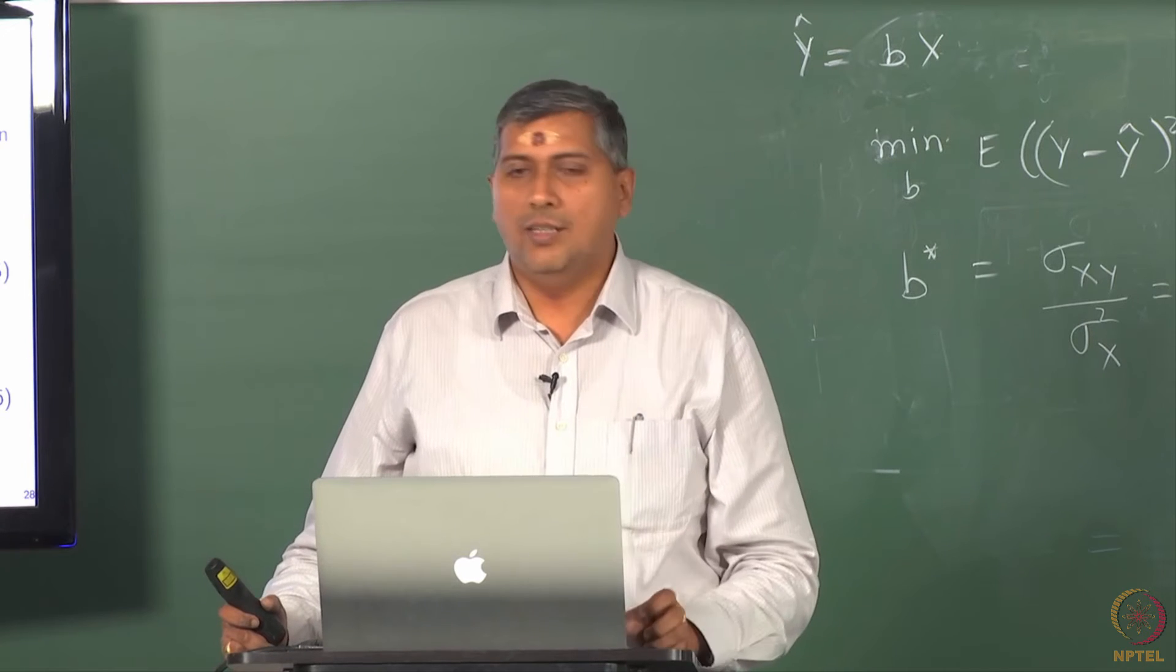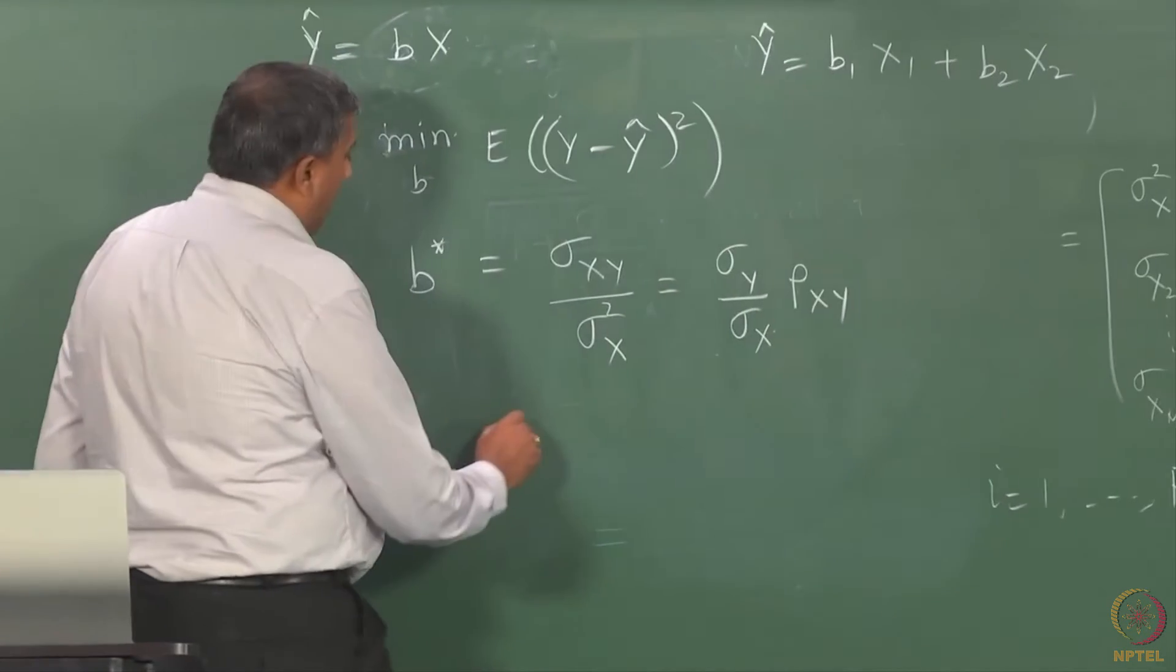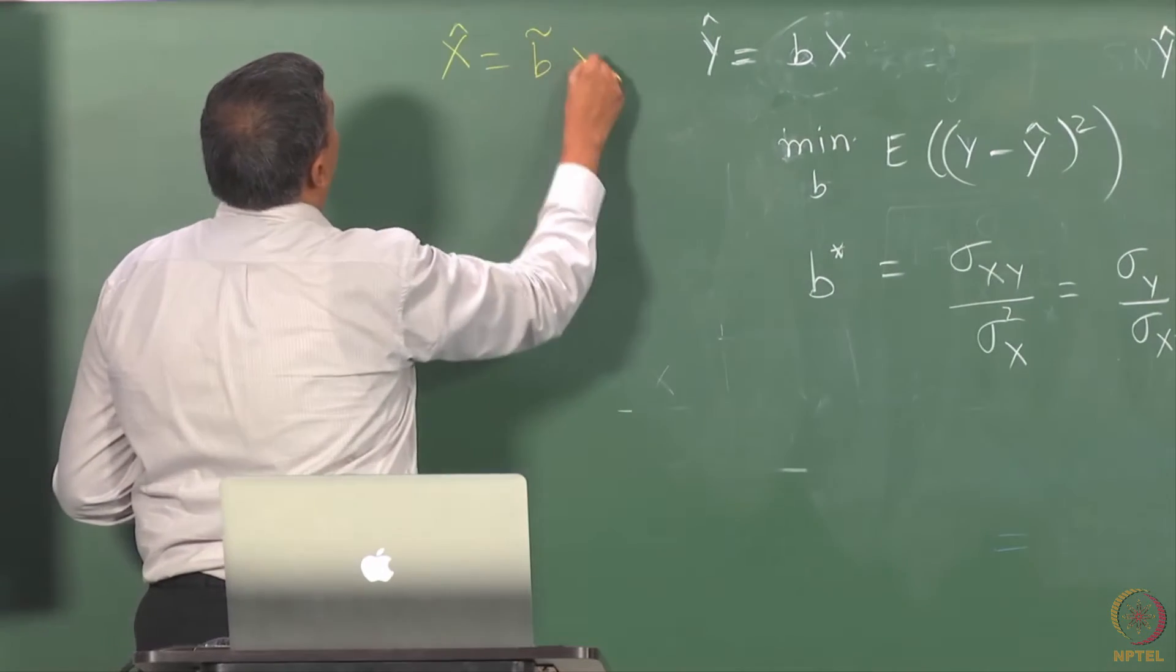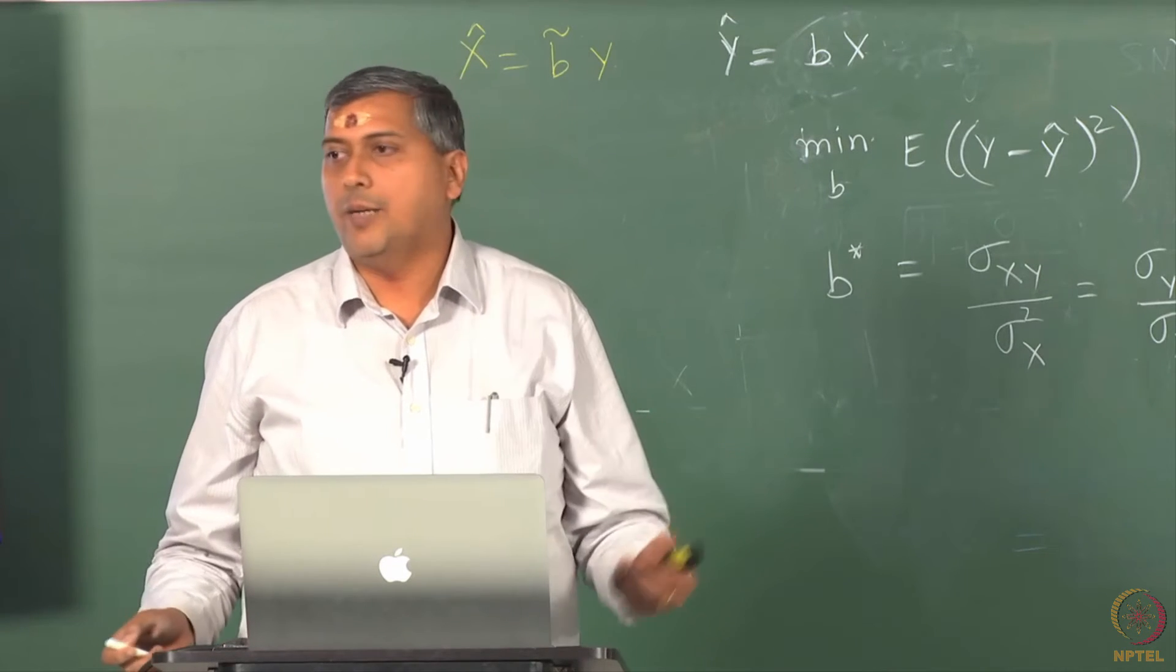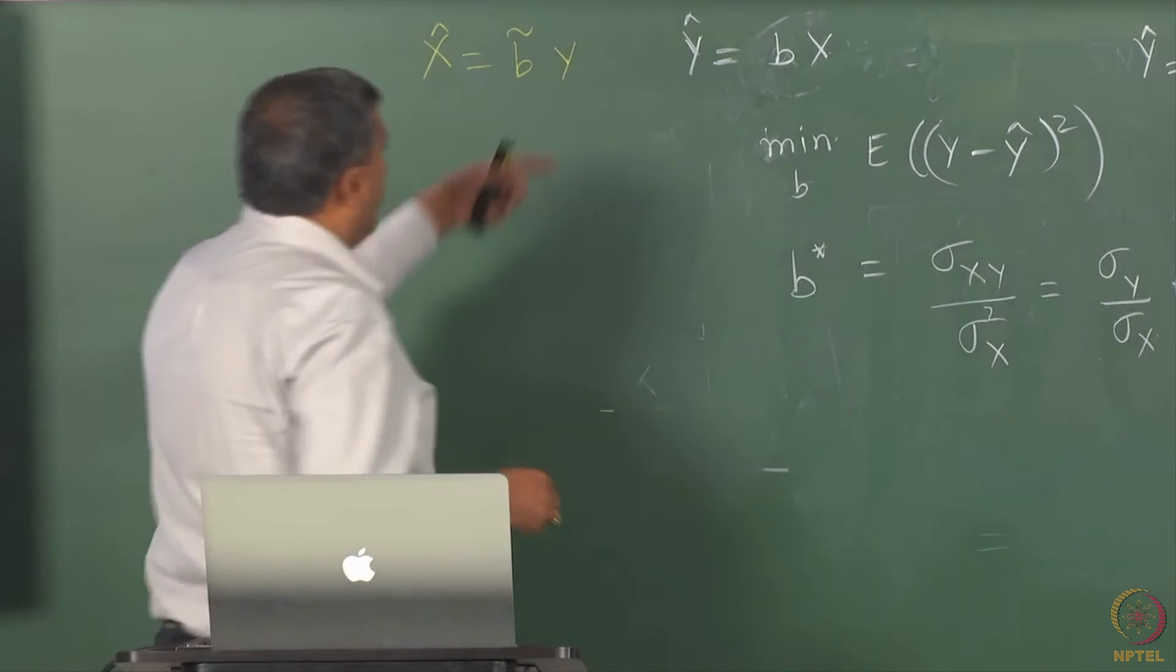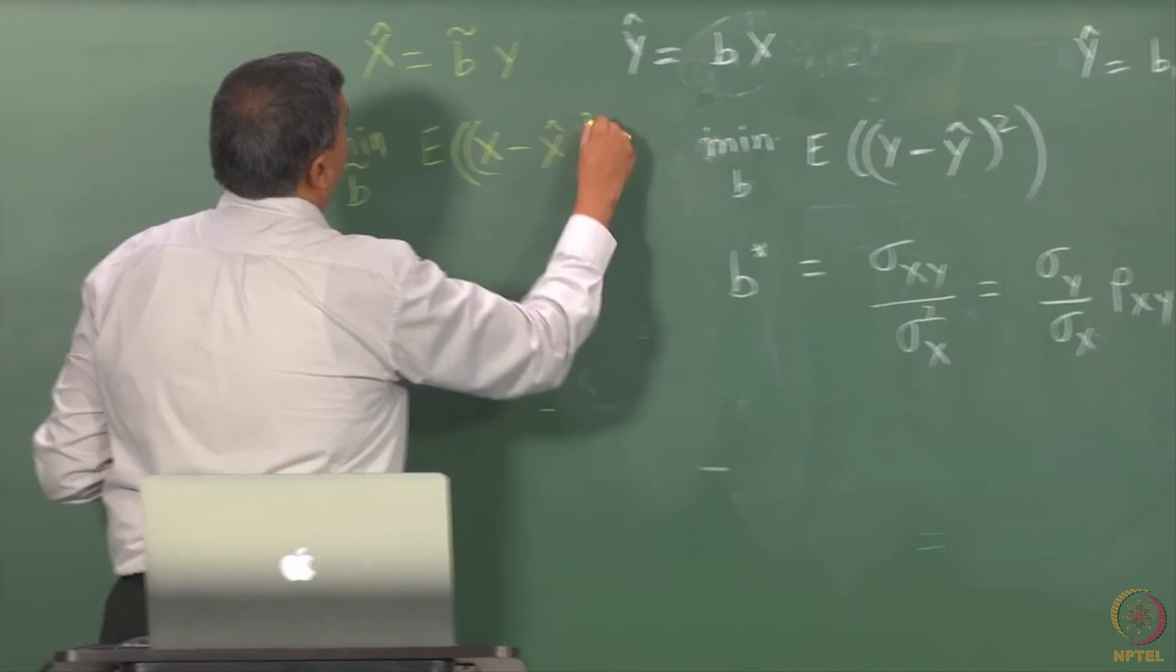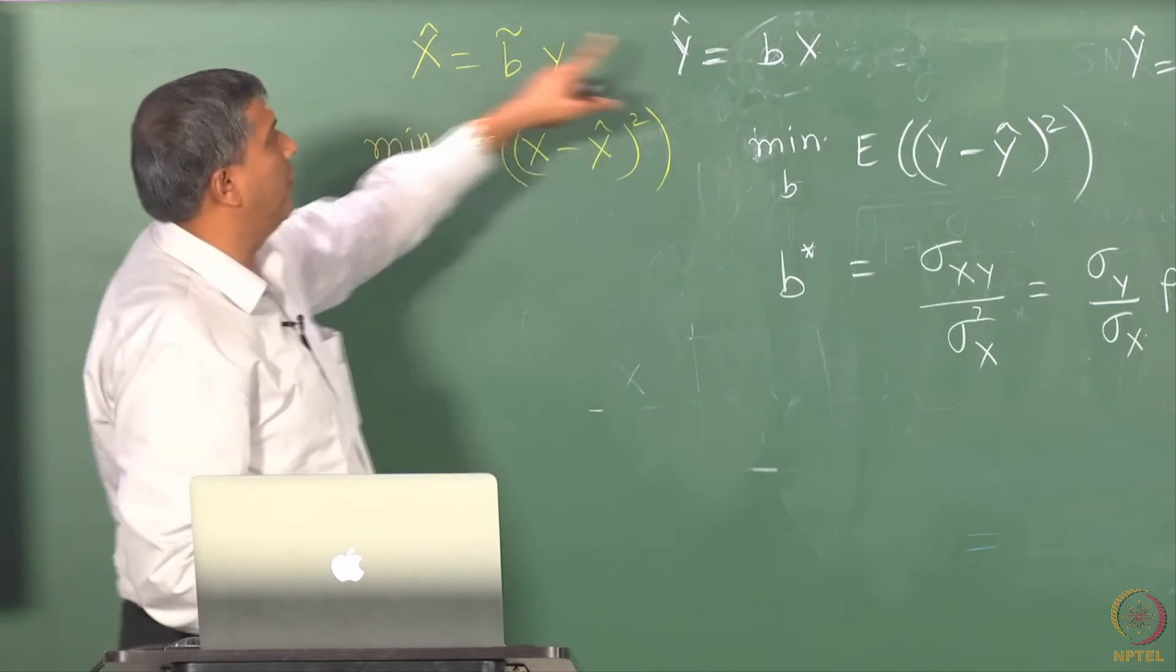Now we will close today's lecture with a very interesting observation, which is: suppose I interchange the roles of y and x, that is, I would like to predict x using y. I say x hat is being predicted using y. I can do that, but let me denote again - I am using a linear predictor, let me denote the coefficient as b tilde, and again going through the same thing, that is find b tilde such that